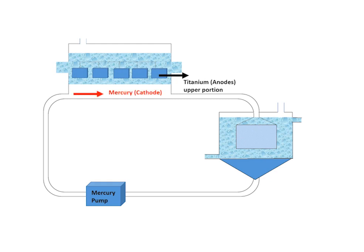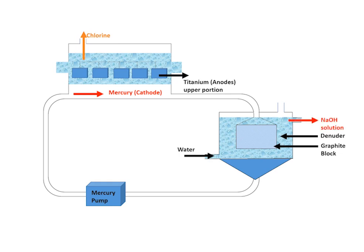A graphite block is present at the denuder, which is the lower portion. As a result of electrolysis, chlorine gas is obtained from the upper portion, whereas sodium hydroxide and hydrogen gas are collected separately from the lower portion. The flowing cathode, that is mercury, will be recycled for the next batch.